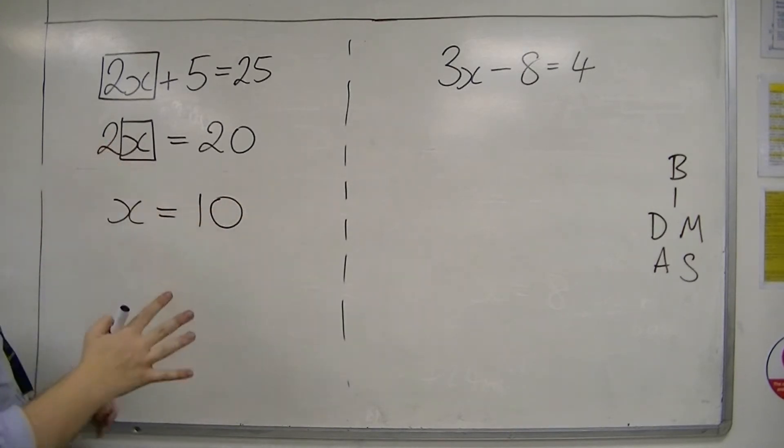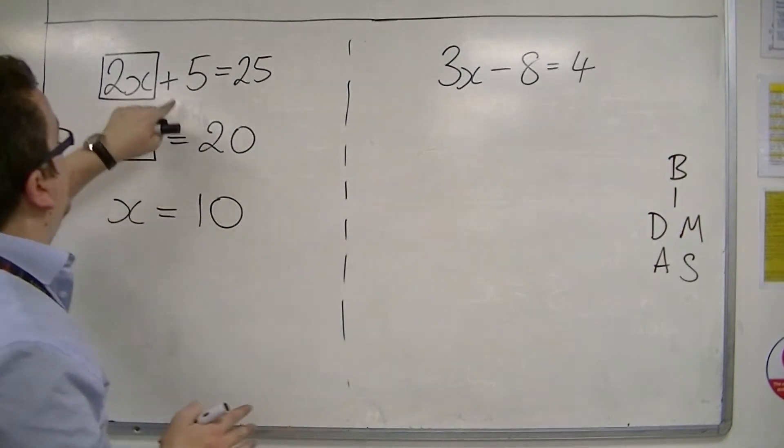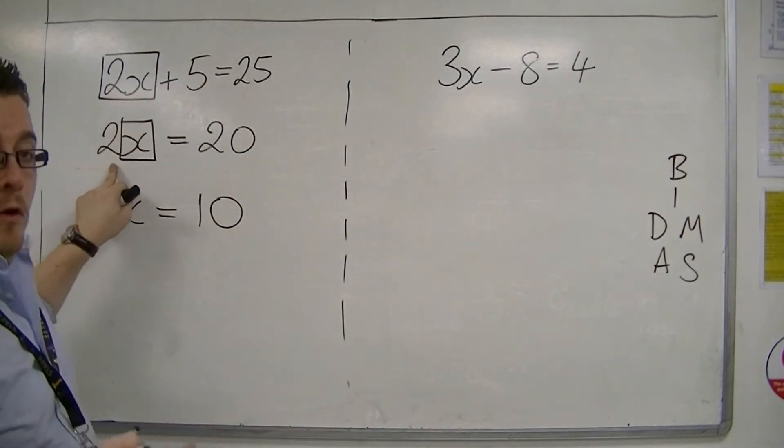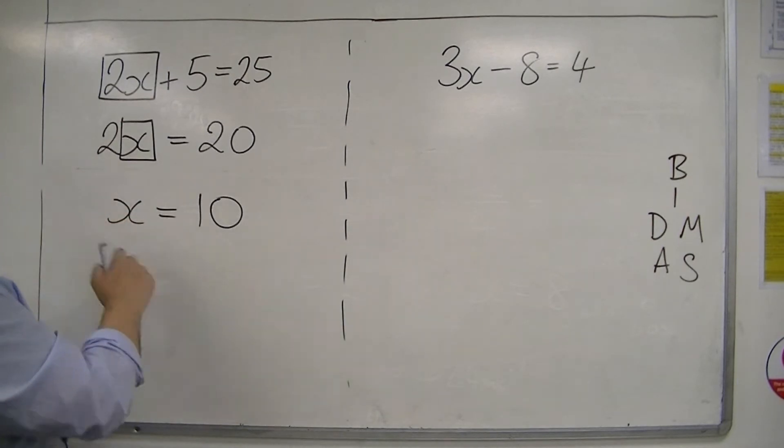And if you want to think of it as a BIDMAS route, then we've dealt with the addition and subtraction, then we're dealing with the multiplication. So x equals 10 is what we're left with. So that's our two-step equation.